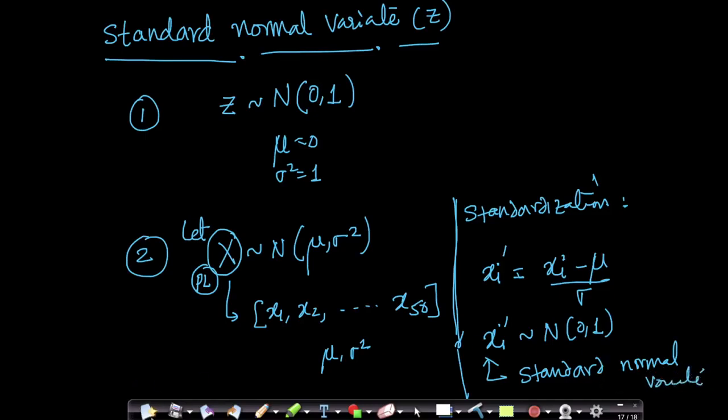In other words, given any distribution, given any random variable with a mean μ and a variance σ², I can convert into my standard normal variate by basically subtracting the values of X by subtracting μ from values of X and dividing it by σ. So as soon as you do this, you can say that z is basically a random variable with a distribution of N(0,1). Such an operation is called standardization of your data.